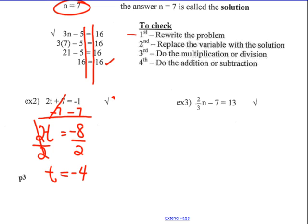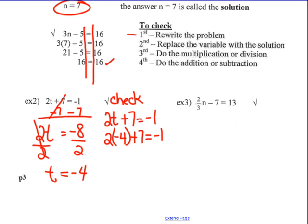A check mark here reminds me that I'm going to do a check. You have to rewrite the original equation as given: 2t plus 7 equals negative 1. I'm going to substitute the variable t with negative 4 — I believe that's the answer. 2 times negative 4 plus 7, does it equal negative 1? Now because I know the variable's value, I'm going to do the correct order of operations.